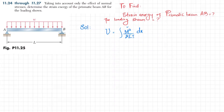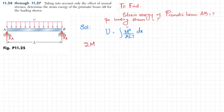This is a simply supported beam. If we remove the support at point A, there will be a reaction force at point A, and if we remove the roller support at point B, there will be a reaction force at point B. First we will find these reaction forces by applying equilibrium conditions.